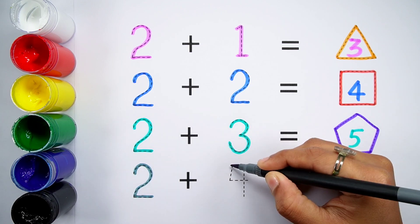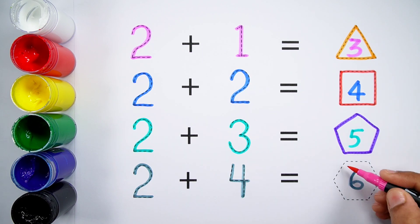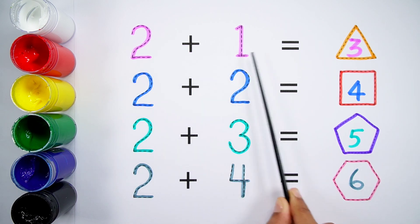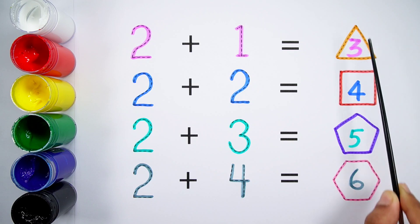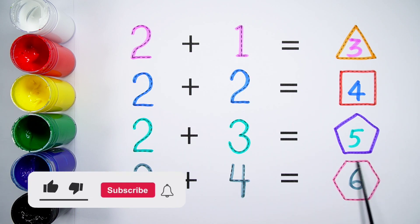2 plus 4 equals 6. Hexagon. 2 plus 1 equals 3, a triangle has 3 sides. 2 plus 2 equals 4, a square has 4 sides. 2 plus 3 equals 5, a pentagon has 5 sides. 2 plus 4 equals 6, a hexagon has 6 sides.